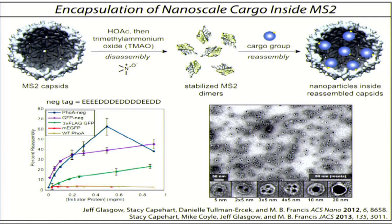The second big challenge is that these are huge molecules. MS2 weighs about 3 million Daltons, and then we're going to put antibodies on the outside to make it bigger still. To get that to work, you need to have extraordinarily fast reactions, such that when you get the big bulk of —